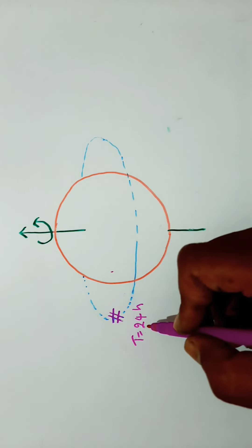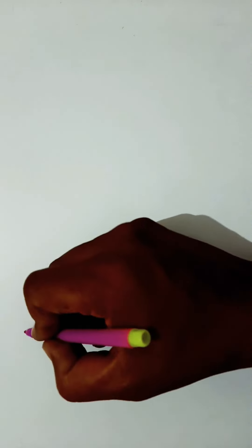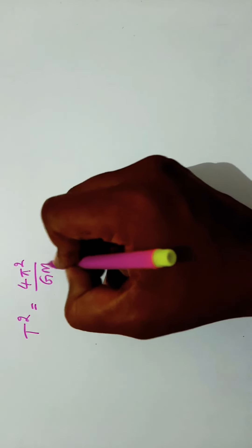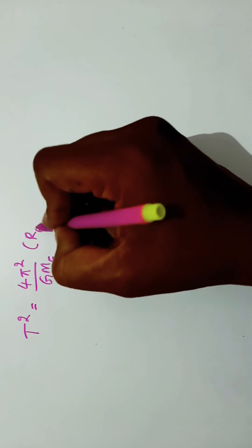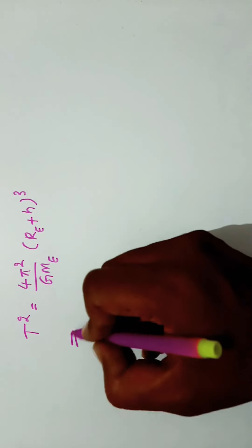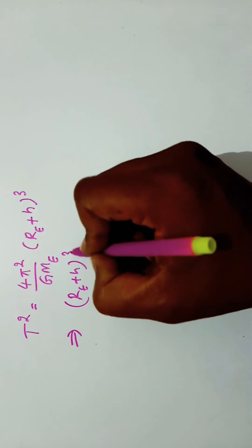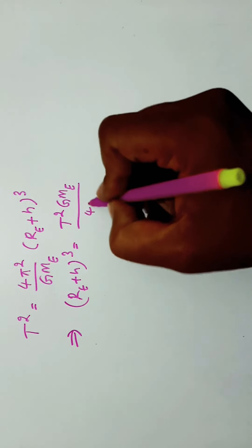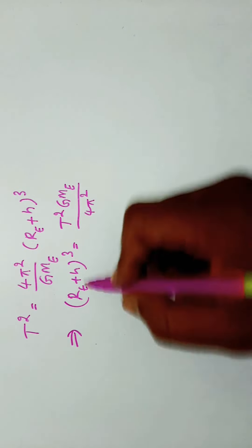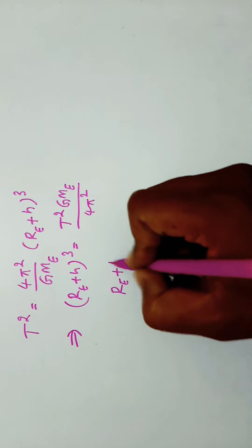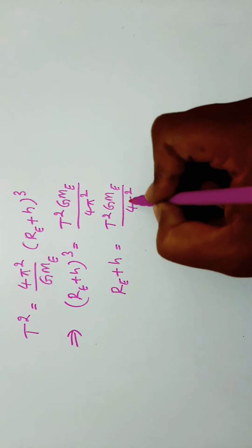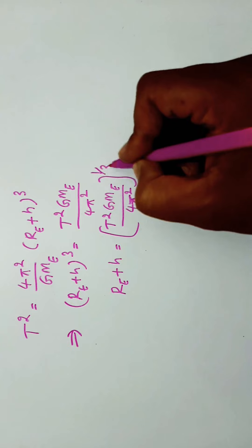According to Kepler's third law (law of periods), T squared equals 4 pi squared divided by GME times (RE plus H) cubed. From this, (RE plus H) cubed equals T squared times GME divided by 4 pi squared. Taking the cube root on both sides, RE plus H equals [T squared times GME divided by 4 pi squared] to the power of 1/3.